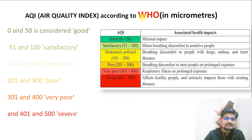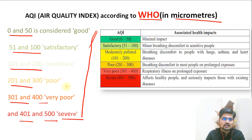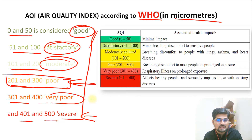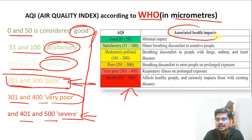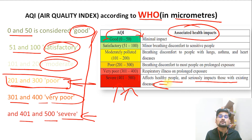Looking at the air quality index according to WHO in micrograms - the categories range from 0 to 50, 51 to 100, 101 to 200, 201 to 300, 301 to 400, and 400 to 500. This is the entire classification from good to severe. Good, satisfactory, moderate - and after 200 it starts becoming poor. Then very poor and severe. You can pause the video and look at the table yourself. The associated health impacts show that the severe case affects healthy people and seriously impacts those with existing diseases. If you already have asthma, you will be more impacted.